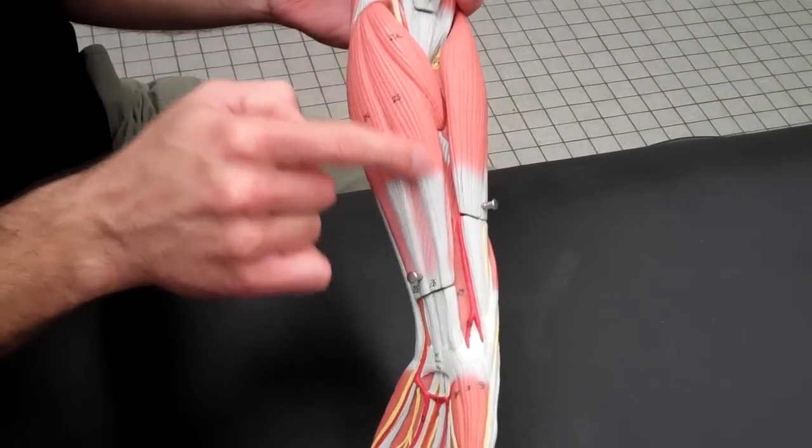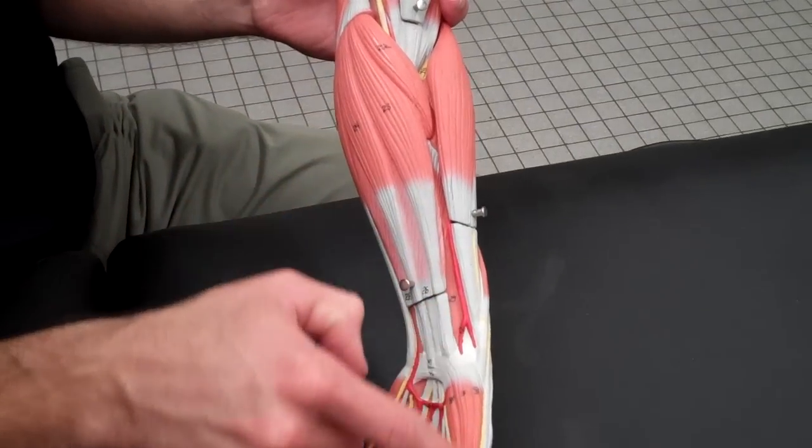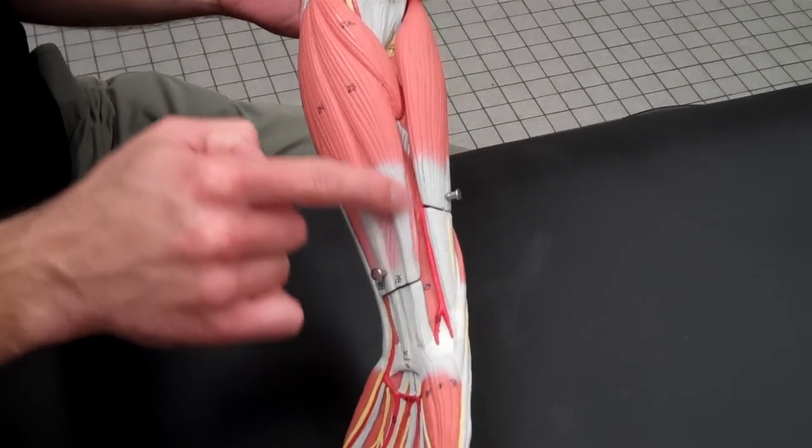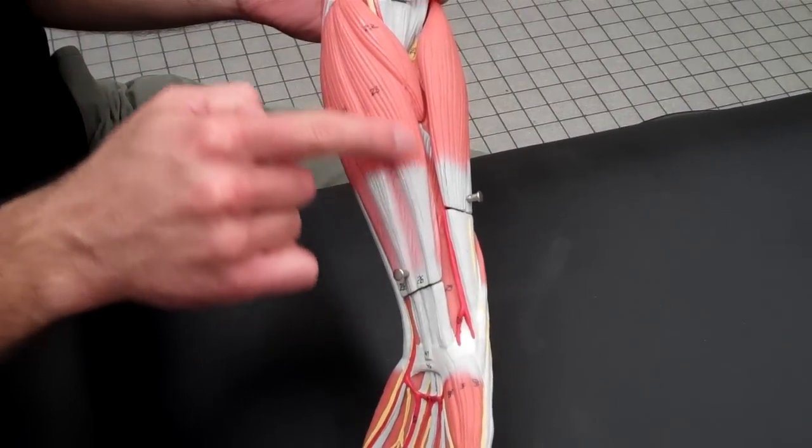As I go next, this one right here, lateral to it, because we're on the thumb side now, this is your flexor carpi radialis.